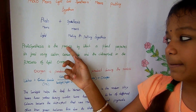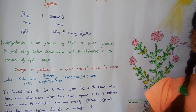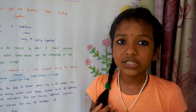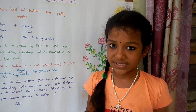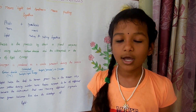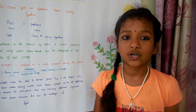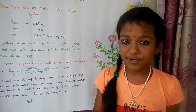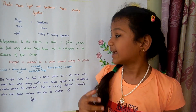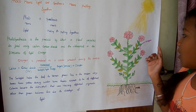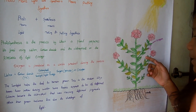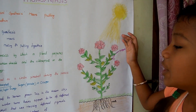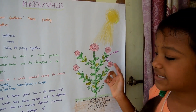Photosynthesis is the process by which a plant prepares its food using water, carbon dioxide, and chlorophyll in the presence of light energy. Oxygen is produced as a waste product during this process.